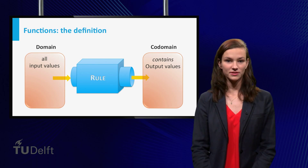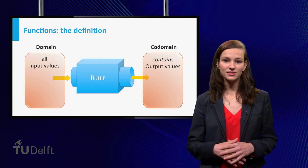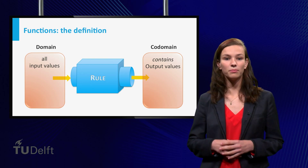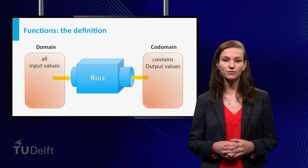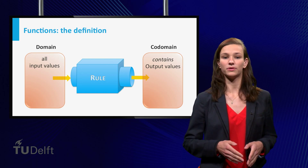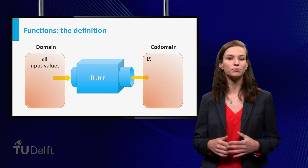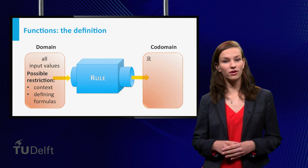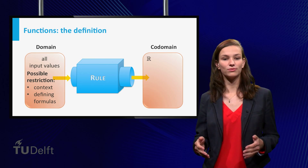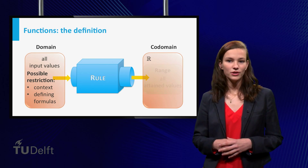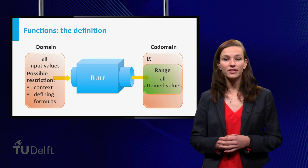This week was all about functions and their properties. We started with a general definition. A function can be seen as a machine that takes its input from a certain set called the domain, and then produces an output that ends up in a set called the codomain. Remember that we only considered functions that send real numbers to real numbers. So the codomain can always be chosen to be R, however the domain does not have to be all real numbers. Given the context, it may be more natural to restrict the domain, and sometimes the defining formulas are simply not defined for certain input values. Once the domain is chosen, you can look at the range, the set of values that the function can attain. This set can be smaller than the full codomain.